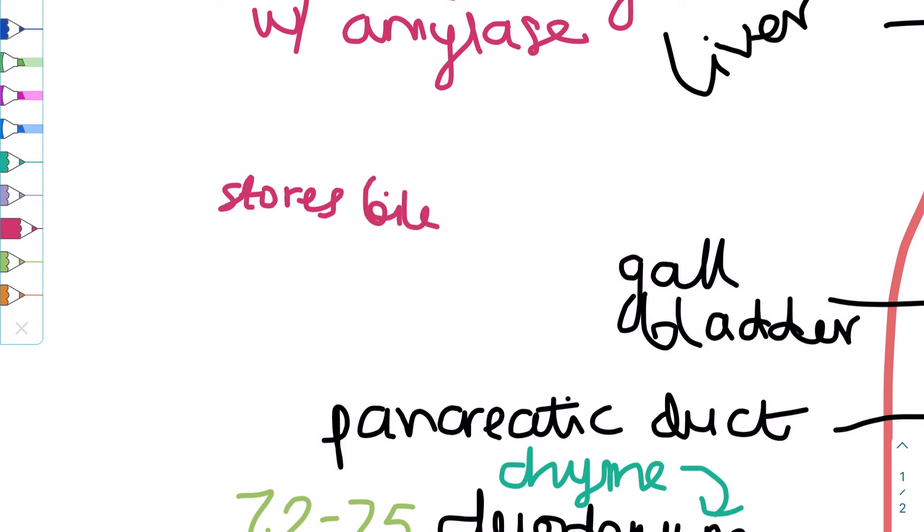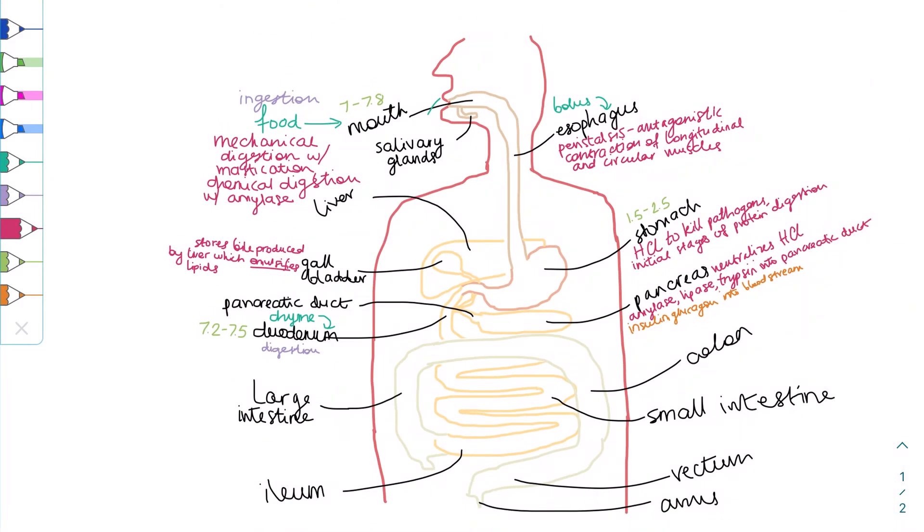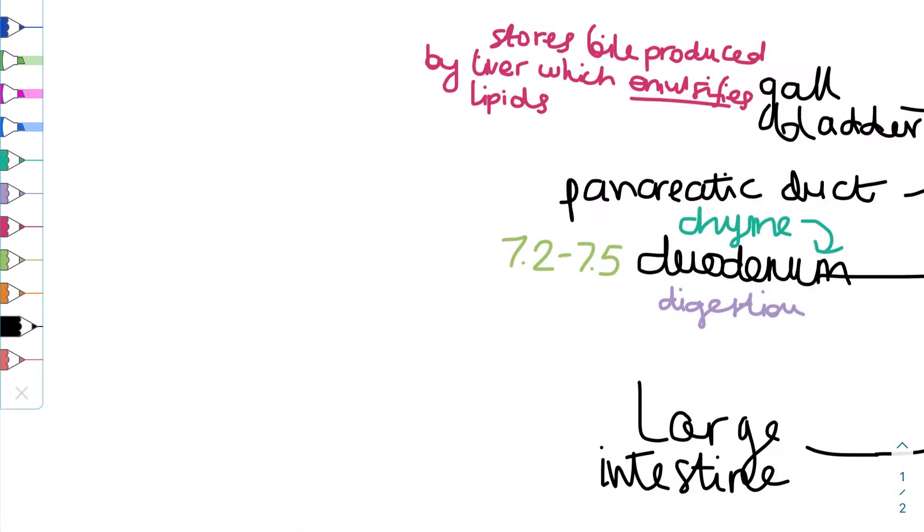But returning to the bile, it is a liquid containing bile salts that emulsify lipids in the food by breaking apart the fat globules into smaller particles by forming micelles around them.